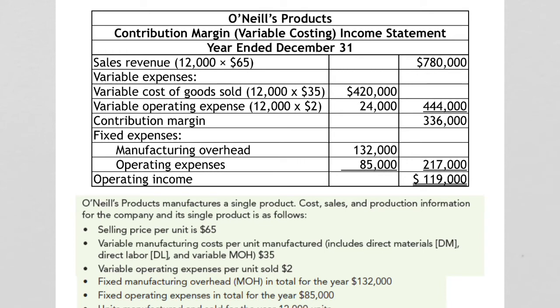Here is the income statement you should have gotten under variable costing — the contribution margin income statement. We start with our sales, which was based on $65 per unit sold, and we sold 12,000 units, giving us sales revenue of $780,000. Then we subtract all of our variable costs. In this problem, we had variable cost of goods sold at $35 per unit and variable operating expenses at $2 per unit. After we subtract those variable costs of $444,000, we get a contribution margin of $336,000. From there, we subtract all of our fixed costs — manufacturing overhead fixed cost of $132,000 and fixed operating cost of $85,000, for a total of $217,000. When you subtract the fixed costs from contribution margin, we're left with operating income of $119,000.